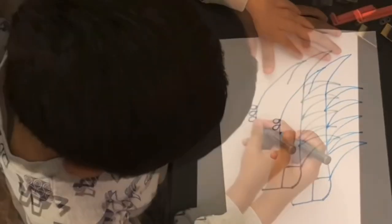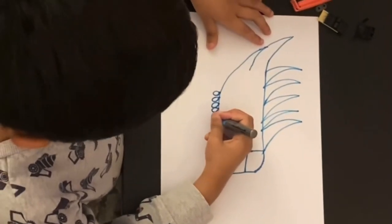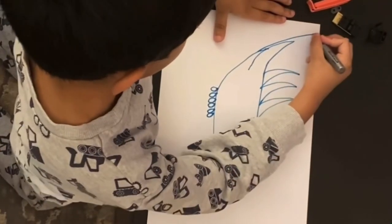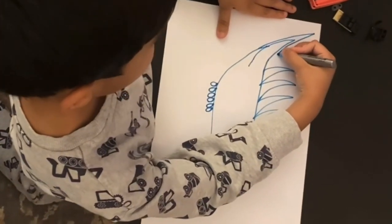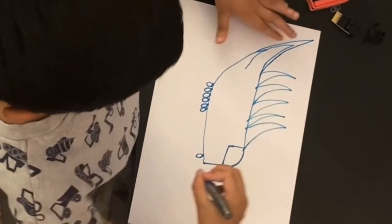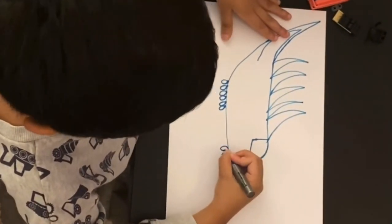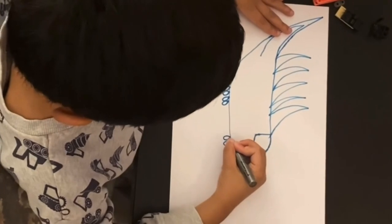He started making the wheels, and as you can see, the wheels keep on increasing as the train will move on the track faster and faster.